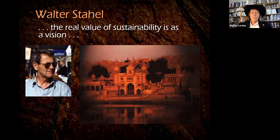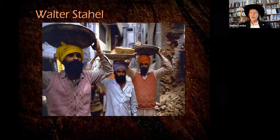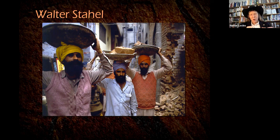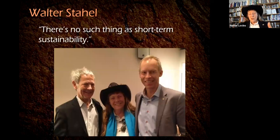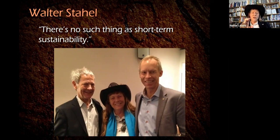The circular economy was conceived by Walter Stahel, who said the real value of sustainability is as a vision. He tells the story of three men: someone asks what they're doing — the first says he's putting in his eight hours; the second says he's cutting limestone into blocks; and the third says he's building a cathedral. That's the vision of sustainability — what is the world that we want to bring into being? Walter says there is no such thing as short-term sustainability; the word is best applied to what you're doing over the long term.